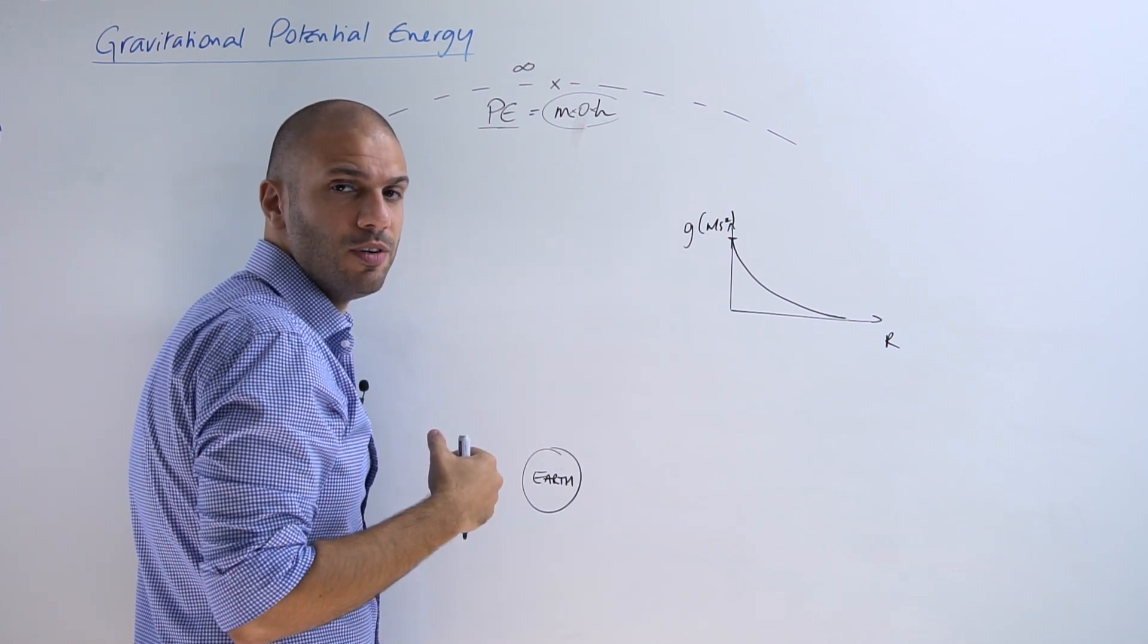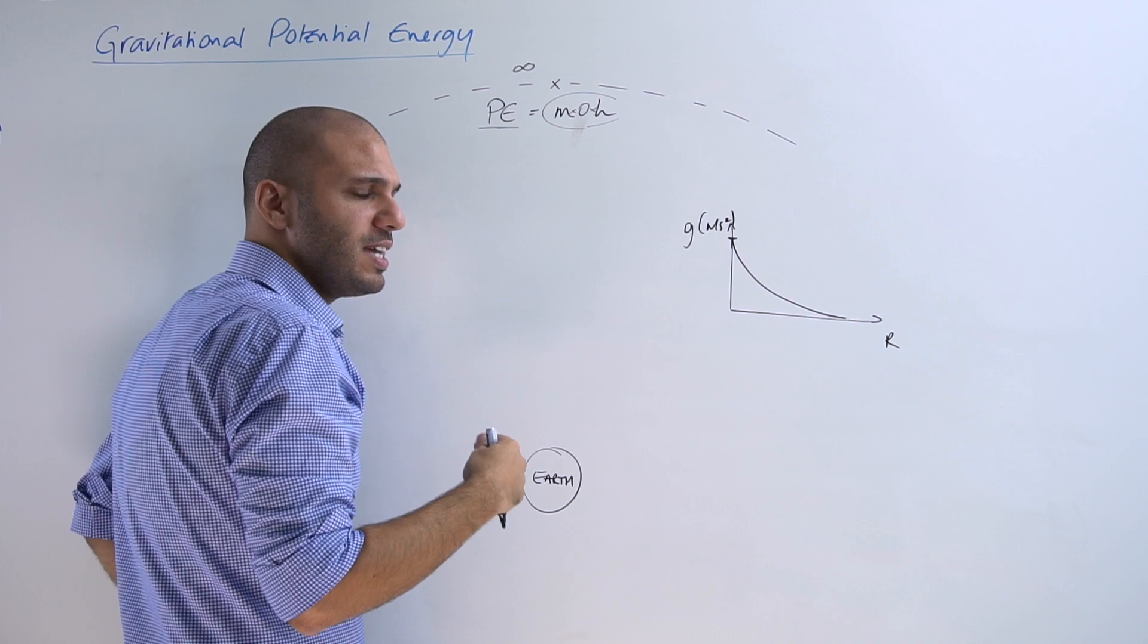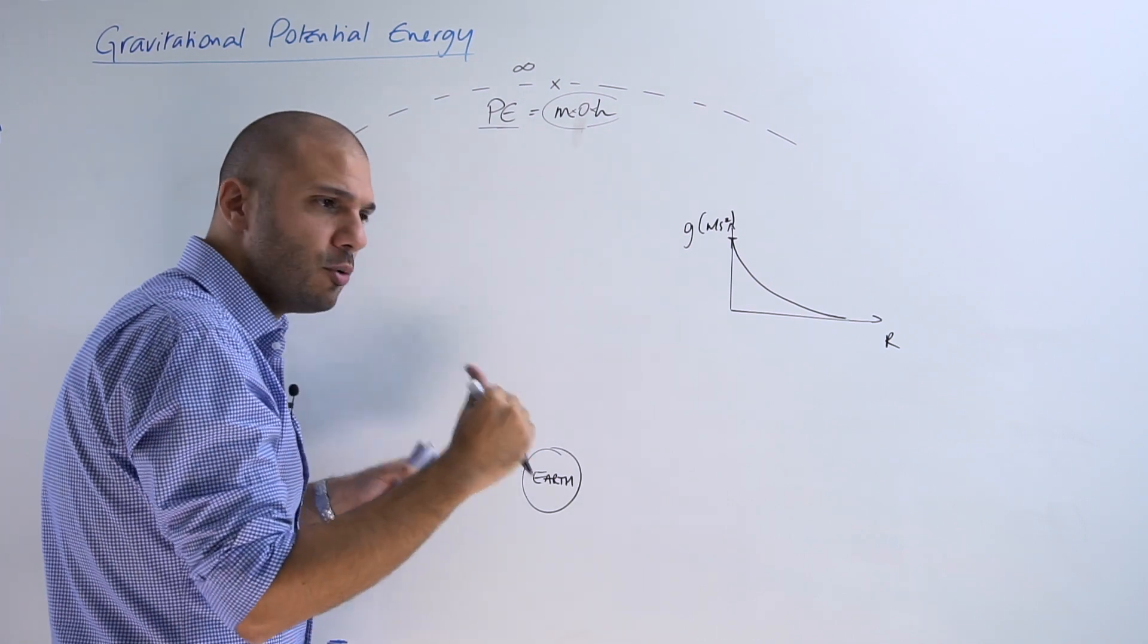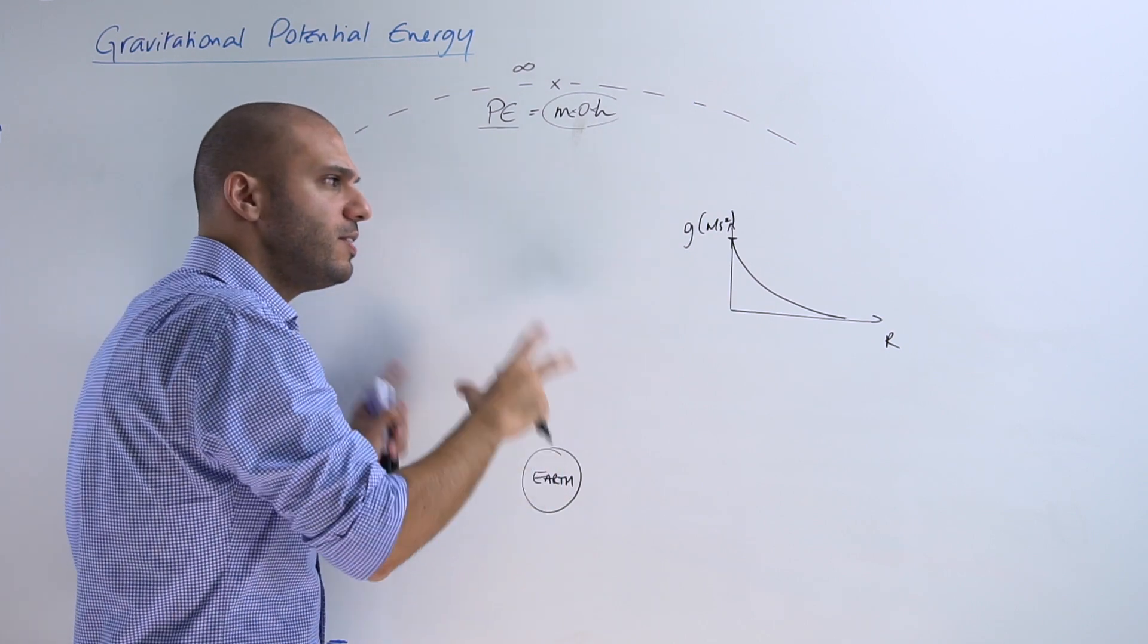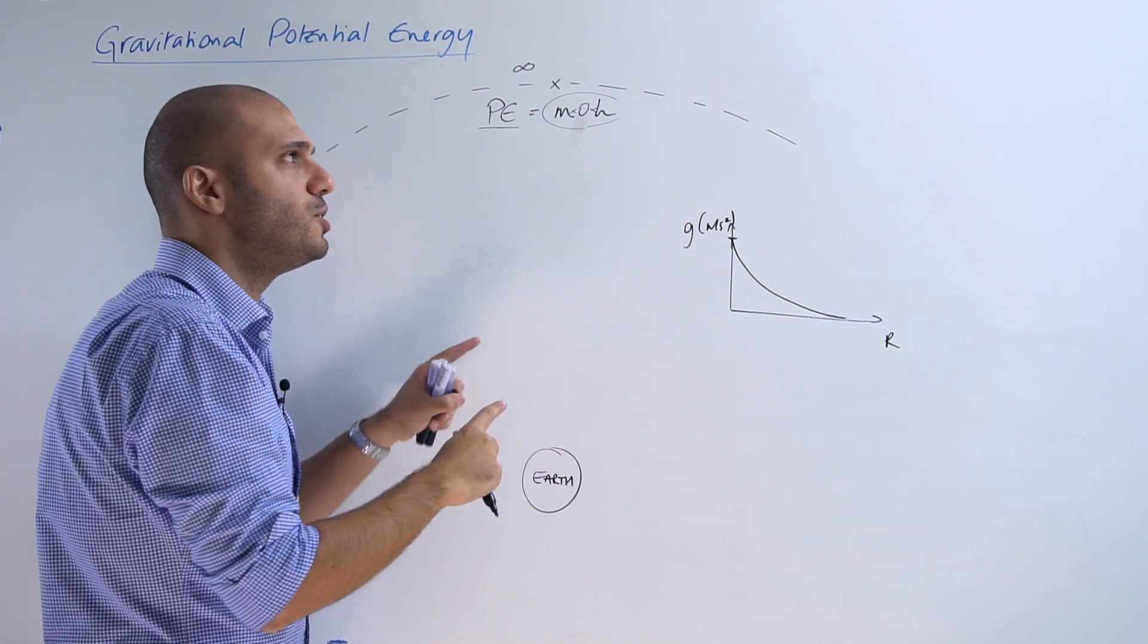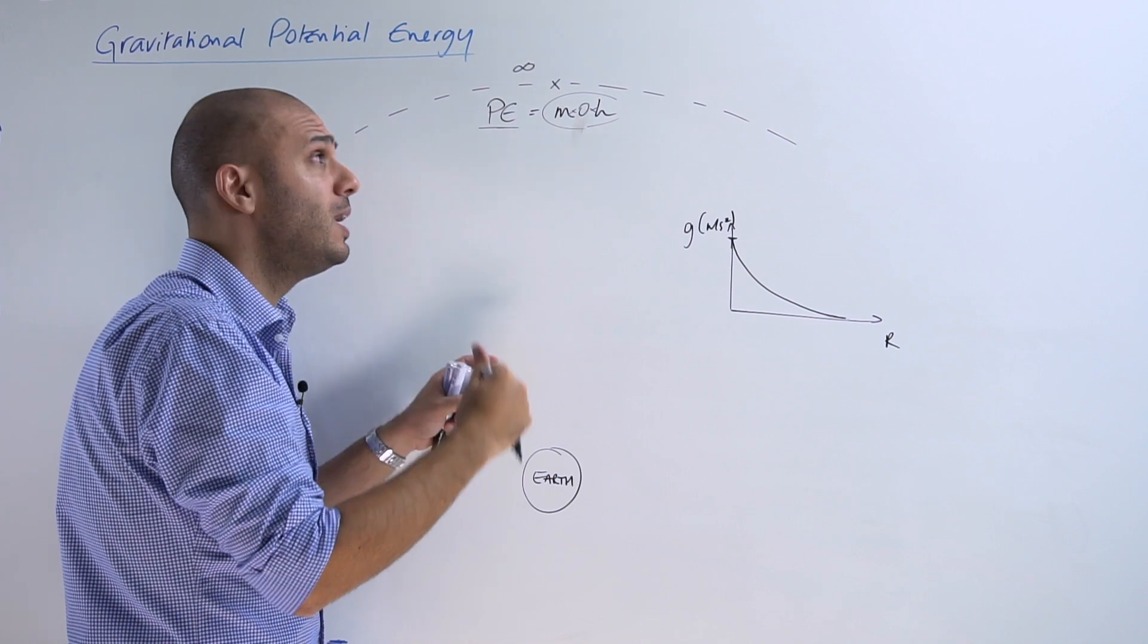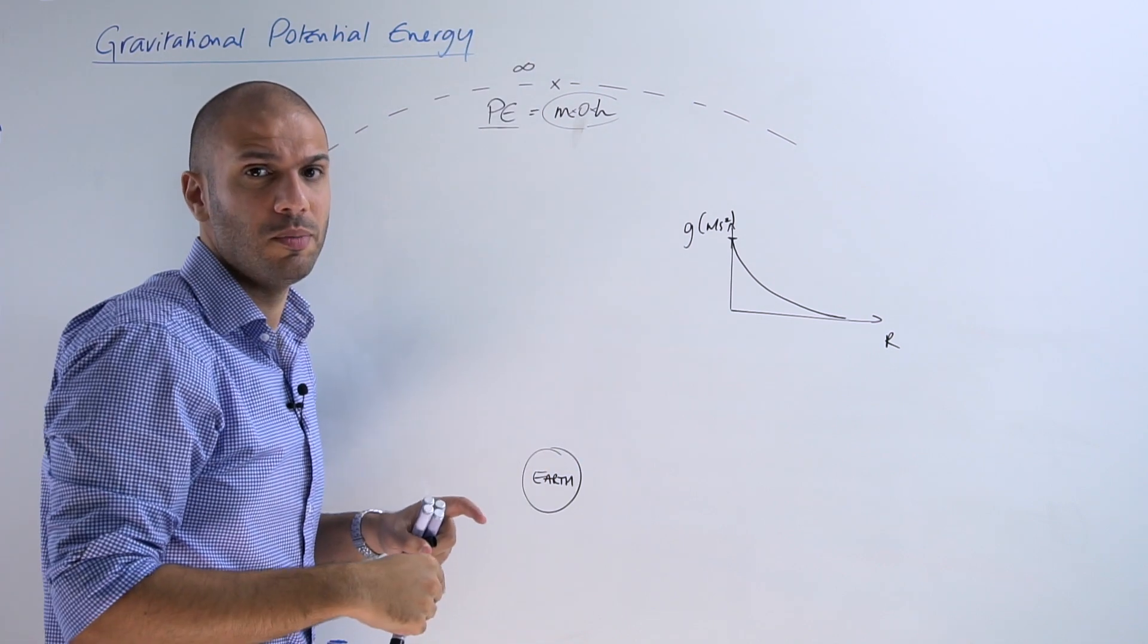So instead of taking the zero joule mark, the zero potential energy at the lowest point possible, in this particular topic the tendency is to take the zero value at the highest point possible, at the point infinitely away from the surface of Earth.